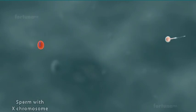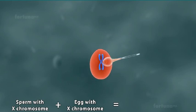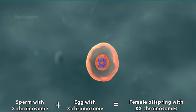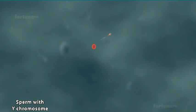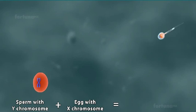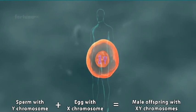When a sperm with X chromosome fertilizes an egg with X chromosome, the offspring will be a female with paired X chromosomes. If a sperm with Y chromosome fertilizes an egg with X chromosome, the offspring will be a male with X and Y sex chromosomes.